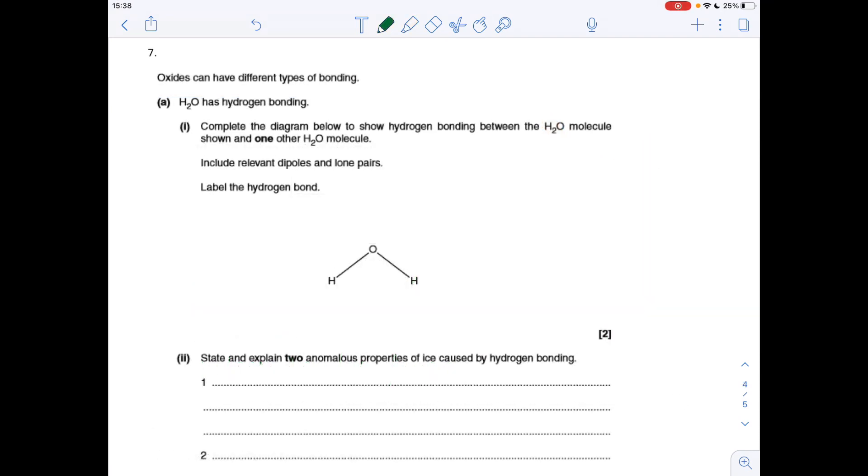The final question. I've got to complete the diagram to show the hydrogen bond between the water molecule that they've drawn and one other, including relevant dipoles and lone pairs, and label the hydrogen bond. I'm going to draw my other water molecule up here. The dipoles they want are delta plus on the hydrogens, delta minus on the oxygens. Put the lone pairs on the oxygen. The hydrogen bond's got to go from the lone pair on the oxygen in this case to hydrogen of a neighbouring molecule. So we'll just say hydrogen bond against that.